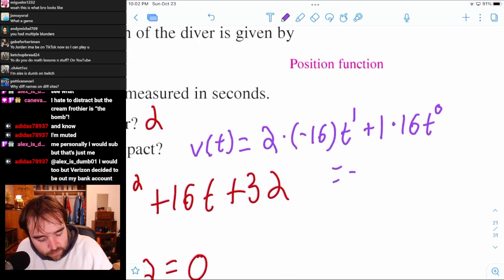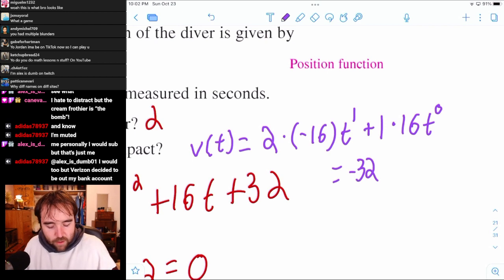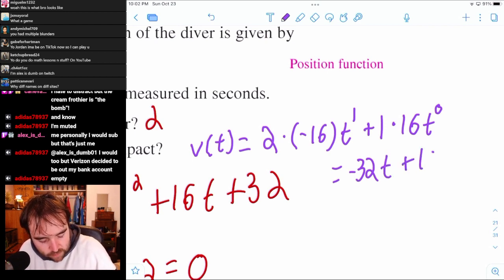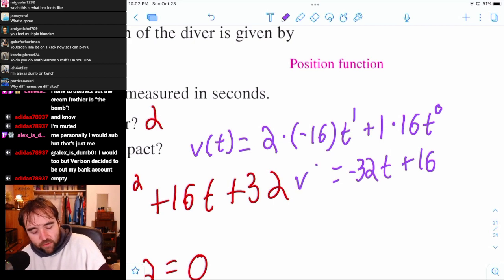And so you just simplify this a little bit. If I was doing this myself, of course, I would have just immediately written it simplified. But negative 32T plus 16. That is our velocity.